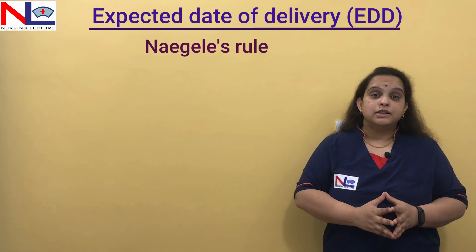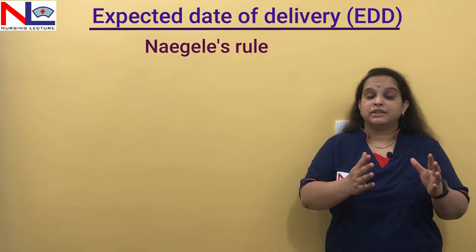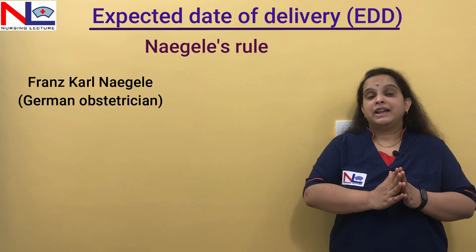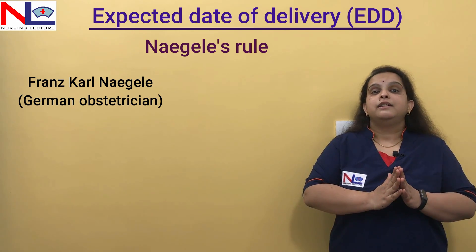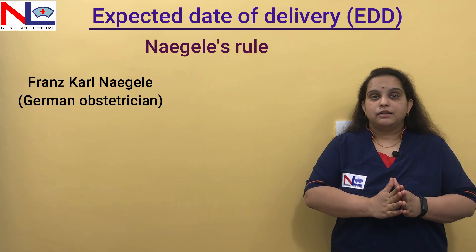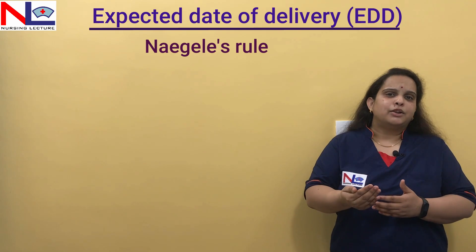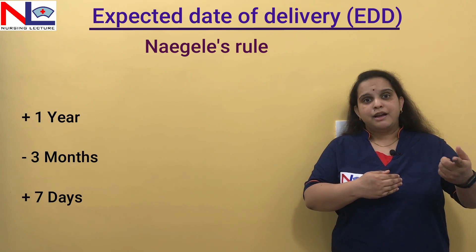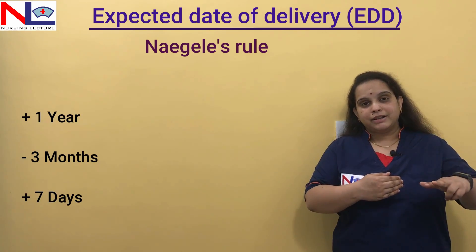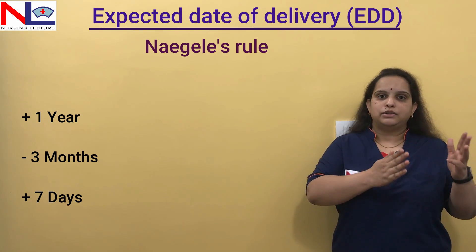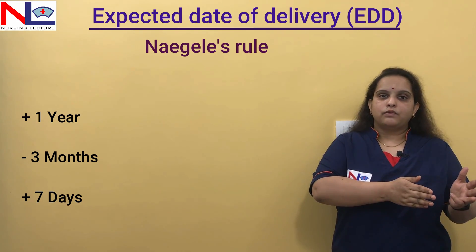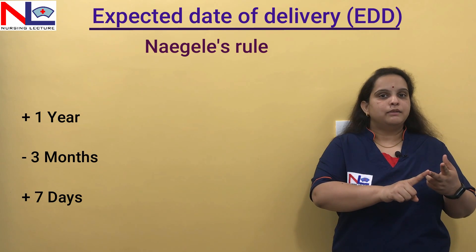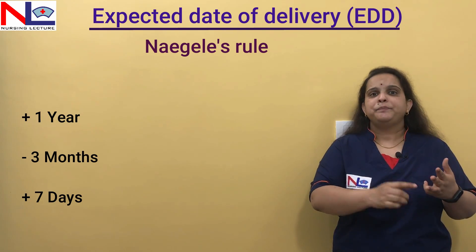This is called Naegele's formula, given by a German obstetrician named Franz Karl Naegele. There is another method where you can add plus one year, minus three months, and plus seven days to the LNMP.